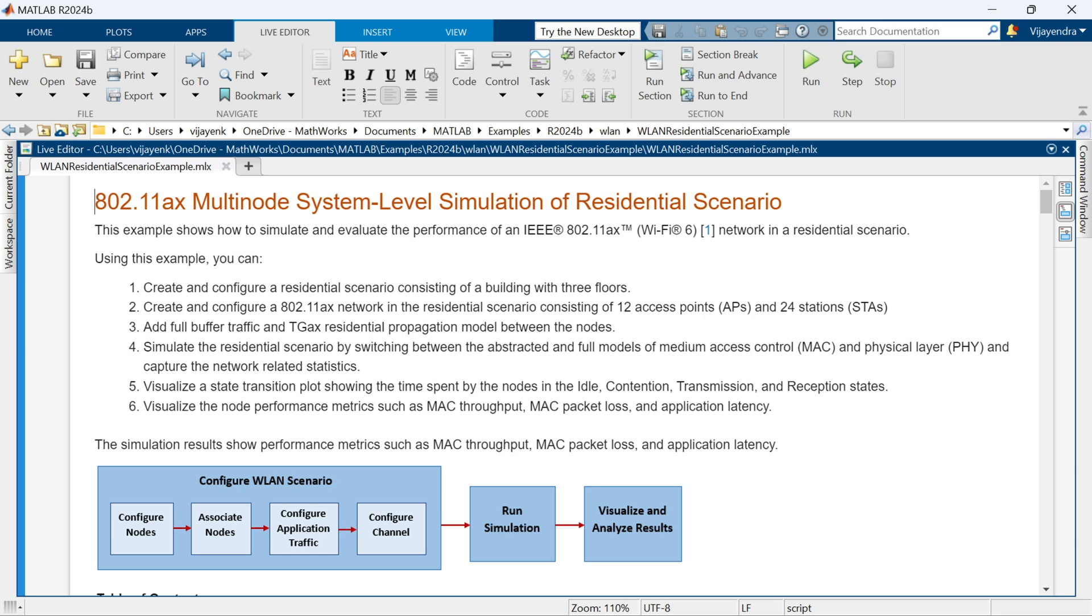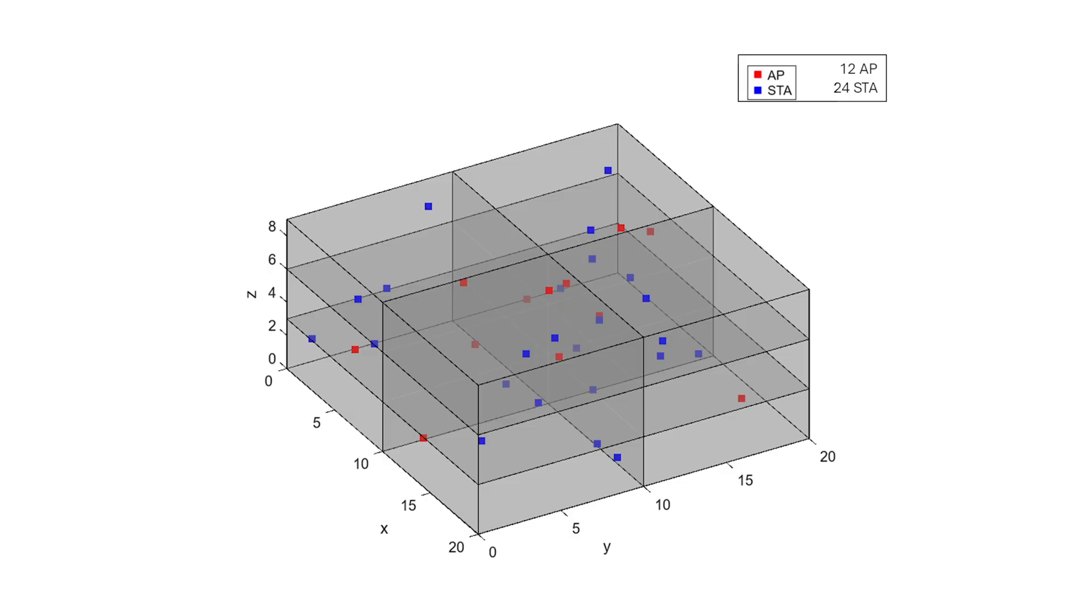Let's explore wireless LAN system-level simulation with an example. In this demo, we're modeling a Wi-Fi network in a residential scenario to evaluate performance. We have a building with 3 floors and 36 WLAN nodes. 12 of them are access points, and the others are stations.